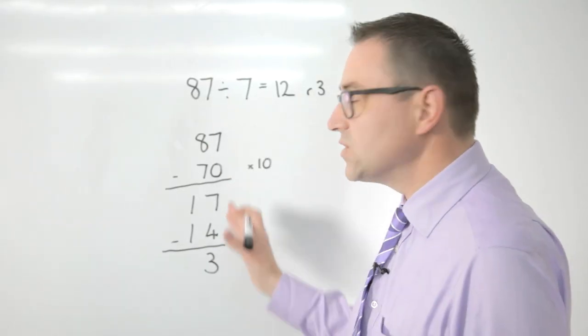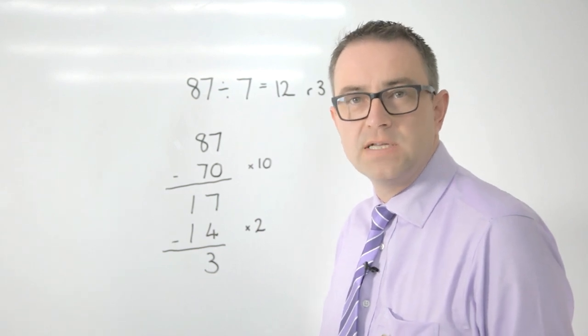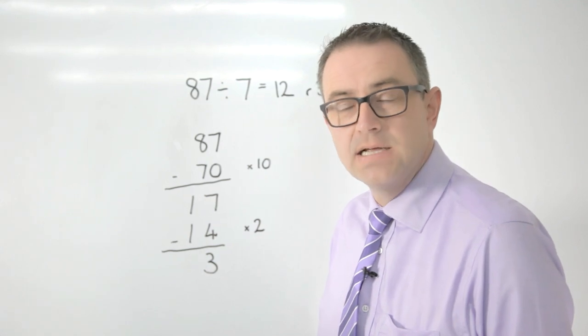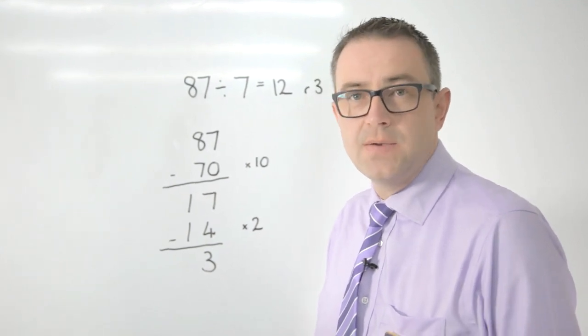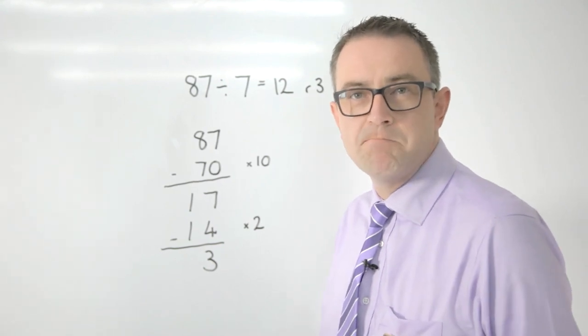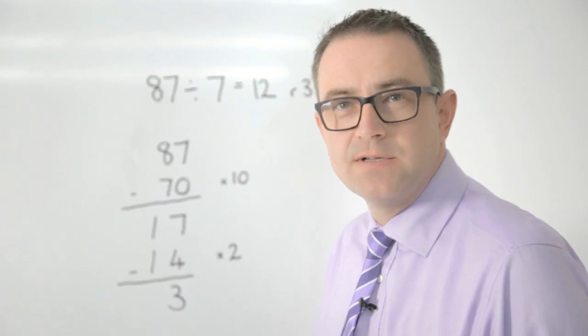And at all times they should also be thinking about whether they need to write anything in the first place. It's really important that the children first of all look at the numbers involved and think about whether they can do that in their head or use a strategy they know. They might simply be able to half the numbers and then half again rather than divide by four. I hope that's a help to you when you're working at home with your children on division.